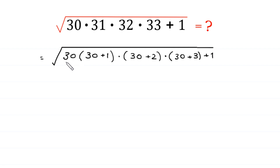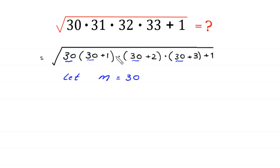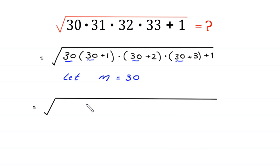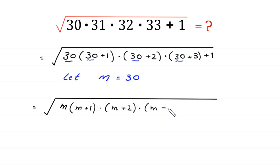Now here we have 30 repeated in each factor. So we suppose that m is equal to 30 and substitute m in place of all these 30s. Then this expression becomes the square root of m times (m+1) times (m+2) times (m+3) plus 1.